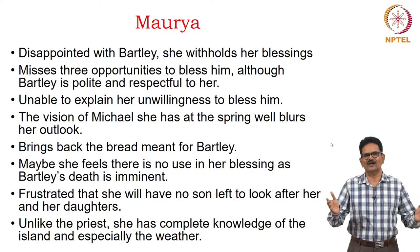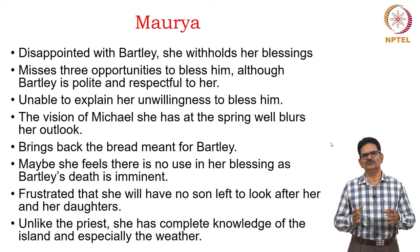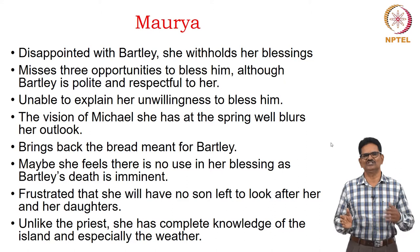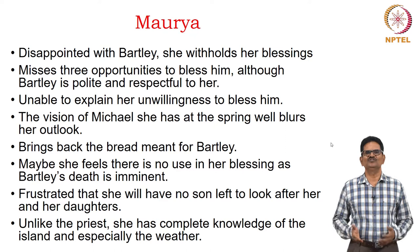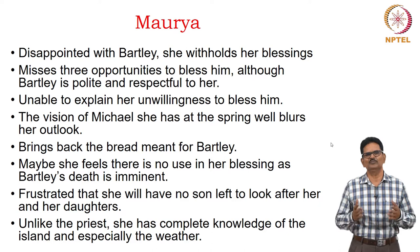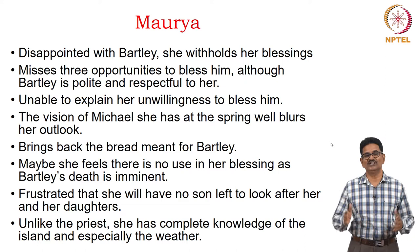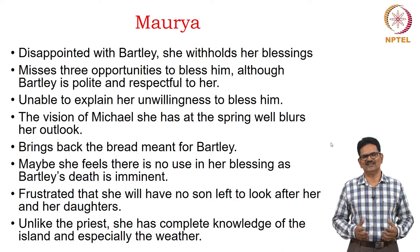She brings back the bread meant for Bartley. Kathleen had given the bread to Maurya and sent her to bless him and give the bread, but she does neither. Perhaps she feels there is no use in blessing as Bartley's death is imminent. She is frustrated that she will have no son left to look after her and her daughters. Unlike the priest, she has complete knowledge of the island and especially the weather, which is why she cautions her son — but the young man doesn't listen.